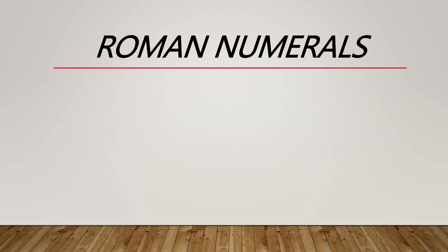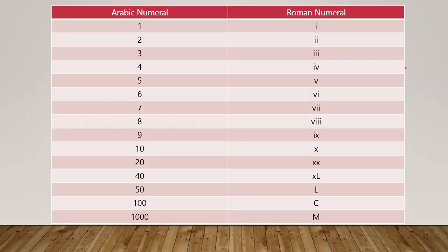All we need to memorize is the numbers on the table. From Arabic to Roman numerals: one is I, two is II, three is III, four is IV, five is V, six is VI, seven is VII, eight is VIII, nine is IX, ten is X, twenty is XX, forty is XL, fifty is L, one hundred is C, and one thousand is M.